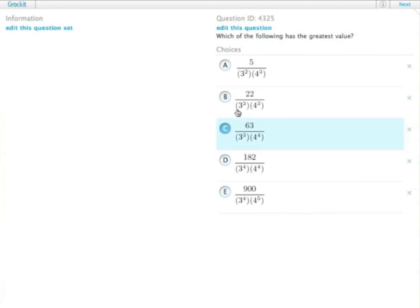Which of the following has the greatest value? It's very important to note in this case that all of the answer choices have the quantity 1 over 3 squared times the quantity 4 cubed in the denominator and can be factored out.